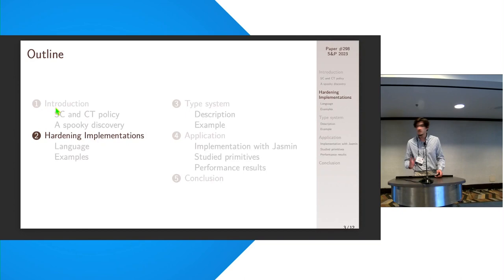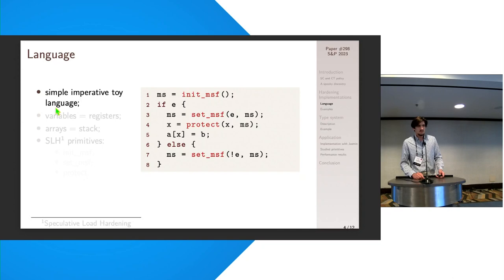So let's detail specifically the kind of countermeasures we want to consider in our formal tool. For that, let's consider a simple imperative toy language, actually very simple, so let's say registers are really equal to all the variables that can be. And if we want to use the memory, we'll actually talk about arrays. So then we consider what's called the speculative load hardening countermeasure, which is something that was, for instance, introduced by the LLVM compiler.